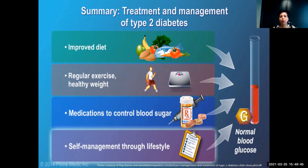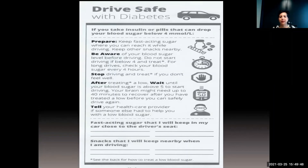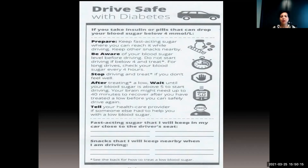One thing every diabetic educator needs to address is 'five to drive.' If you are a diabetic with an active license, you must maintain your blood sugar above 5.0 so you are not hypoglycemic behind the wheel — if that happens you could potentially lose your license after an accident. Within arm's reach — not in your purse — have something to bring your blood sugar up, such as an apple, a healthy snack like nuts, or a juice box in the car.